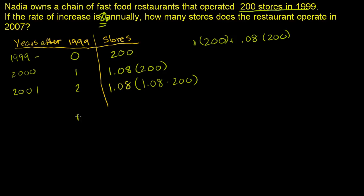If after n years after 1999, it's going to be 1.08, let me write it this way. It's going to be 200 times 1.08 to the nth power. After two years, 1.08 squared. One year, 1.08 to the first power. Zero years, this is the same thing as 1 times 200, which is 1.08 to the zeroth power.